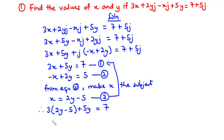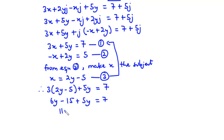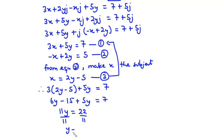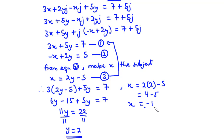Multiplying through: 6y - 15 + 5y = 7, so 11y = 7 + 15 = 22, giving y = 2. Substituting y = 2 into equation 3: x = 2(2) - 5 = 4 - 5 = -1. Therefore x = -1 and y = 2.